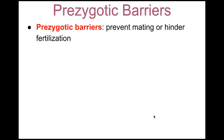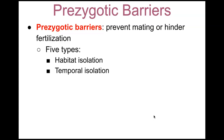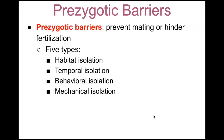Pre-zygotic barriers prevent mating or hinder fertilization. There are five types of pre-zygotic barriers: habitat isolation, temporal isolation — and whenever you see the word temporal, that refers to time — behavioral isolation, mechanical isolation, and lastly gametic isolation.